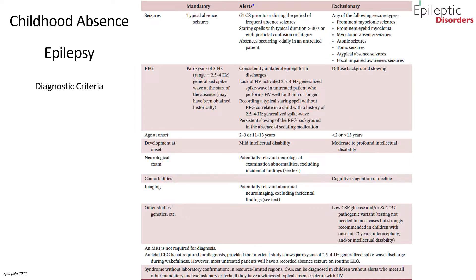This slide discusses the recent 2022 diagnostic criteria for childhood absence epilepsy. Under the mandatory column are essential features needed to fulfill a diagnosis, including typical absence seizures and typical EEG findings of 3 Hz generalized spike and wave discharges. Under the alerts column are criteria absent in the vast majority of patients but rarely seen. Alerts alone would not exclude the syndrome but should cause the clinician to rethink the diagnosis and undertake further investigation. The more alerts present, the less confident one can be in the diagnosis.